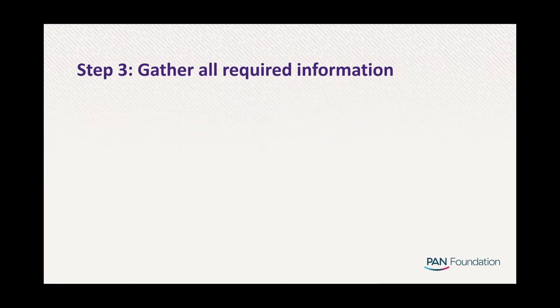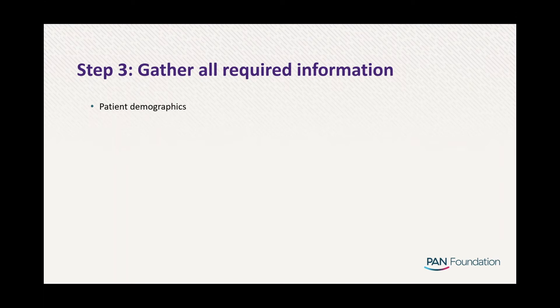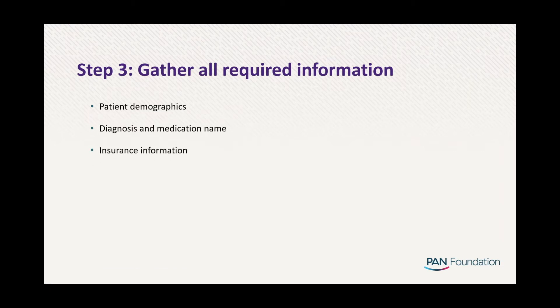Step three: gather all required information. If you meet all the criteria, you will need the following before starting the application: demographic information such as name, address, phone number, and email address; the diagnosis and medication name; health insurance information; income and number of people in your household; and the physician and facility's contact information.